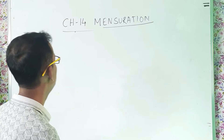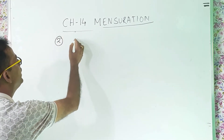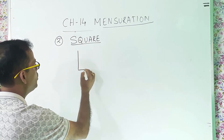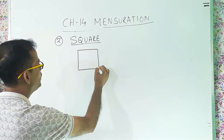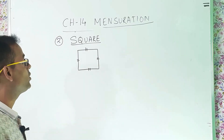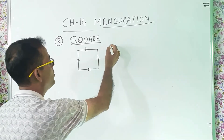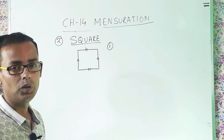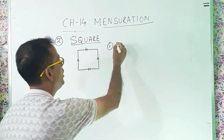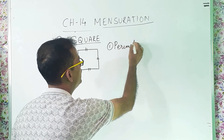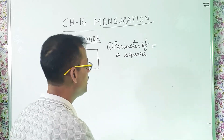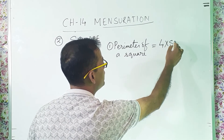After this, we are going to understand another figure — that is the square. A square means all four sides are equal. So I will draw one square. For a square also, we need to know the formulas. If you have your pen and notebook, write them down — pause the video, write, then watch again. The first formula is the perimeter of a square: 4 into side, in units.